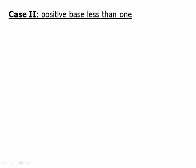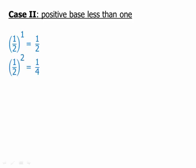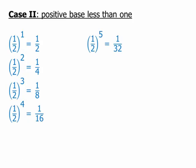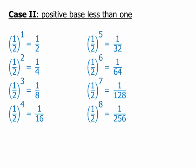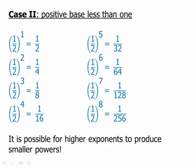Suppose we have a positive base less than one — for example, one half. One half to the one is one half, one half squared is a quarter, then an eighth, then a sixteenth. Things are getting smaller and smaller. We get down to one over 128 and then one over 256. So just as in the first case we got big very quickly, now we're getting small very quickly. With a base between zero and one, raising higher powers produces smaller and smaller results — a very different pattern than when the base is greater than one.